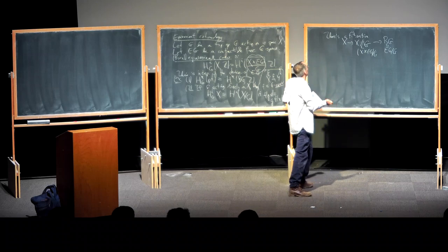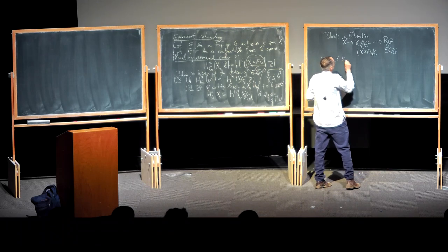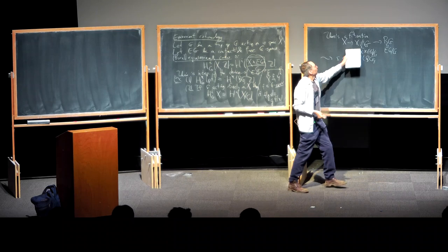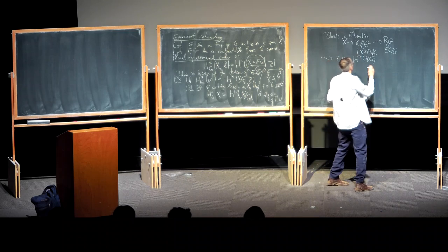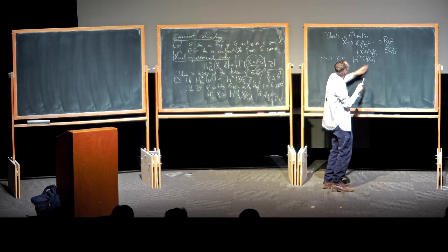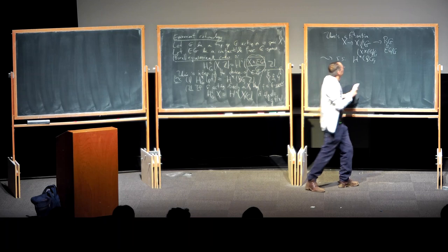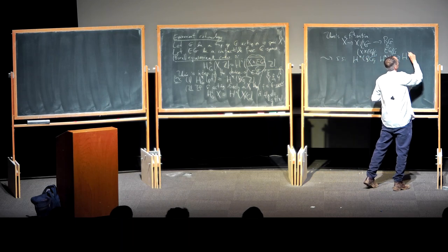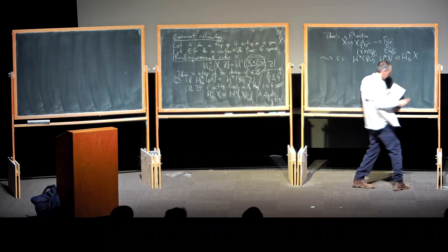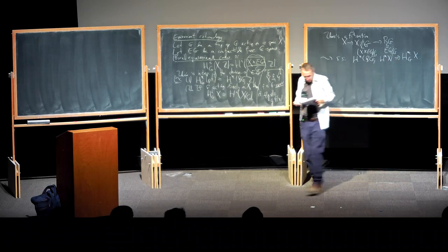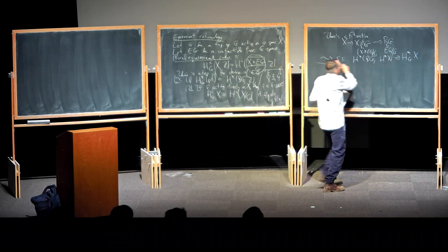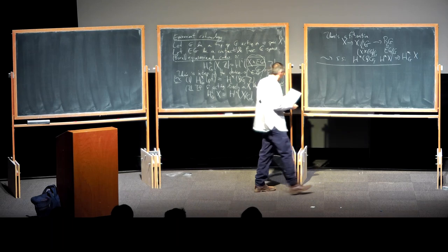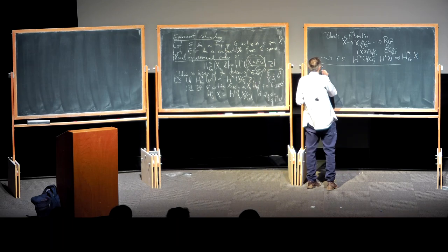For example, you get a spectral sequence for computing equivariant cohomology in terms of the cohomology of BG and of X. Now I can immediately imitate this story in algebraic geometry, given what we've said. So: equivariant Chow groups, following Edidin and Graham.